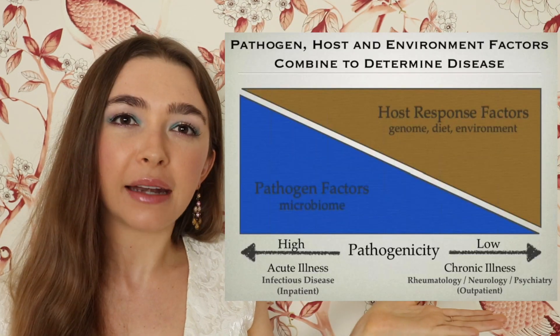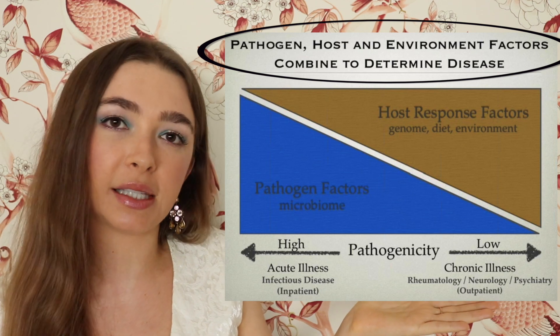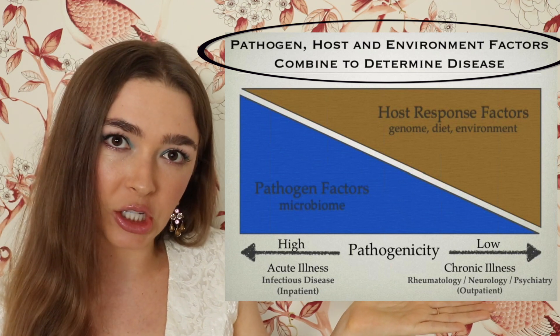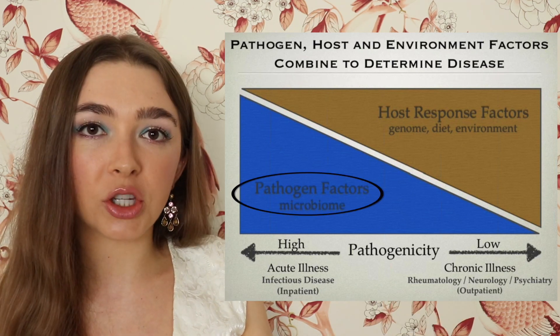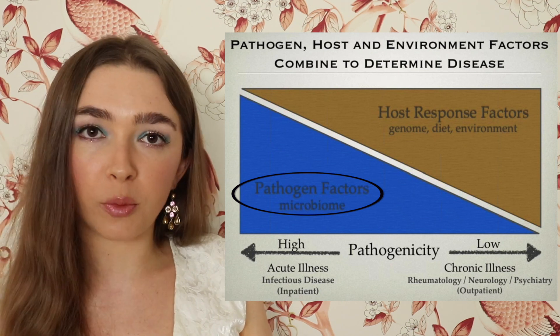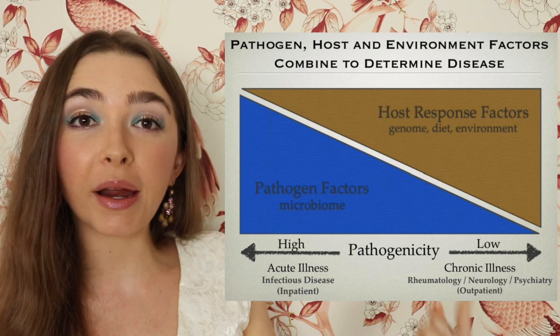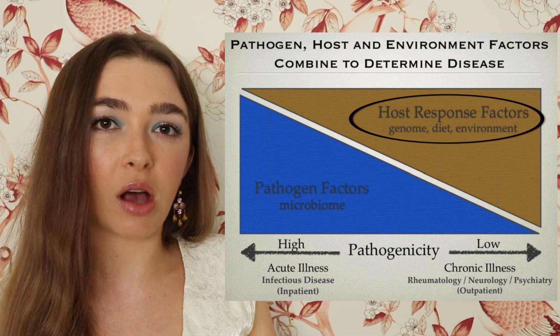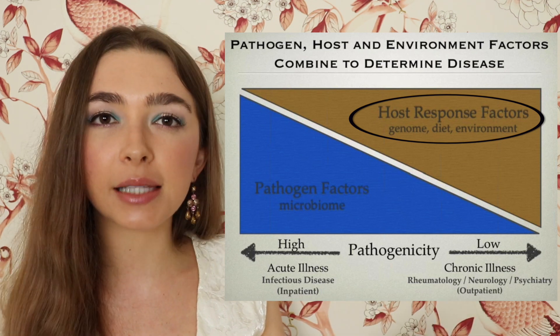Looking at this slide, the interplay between the pathogen, host, and the environment influences disease presentation. On the left-hand side, microbes with high pathogenicity — frontal pathogens — often have similar symptoms. On the right-hand side, chronic infections often have different disease presentations because the symptoms are more dependent on the host. Of course, these are generalizations, and there are exceptions to every rule.